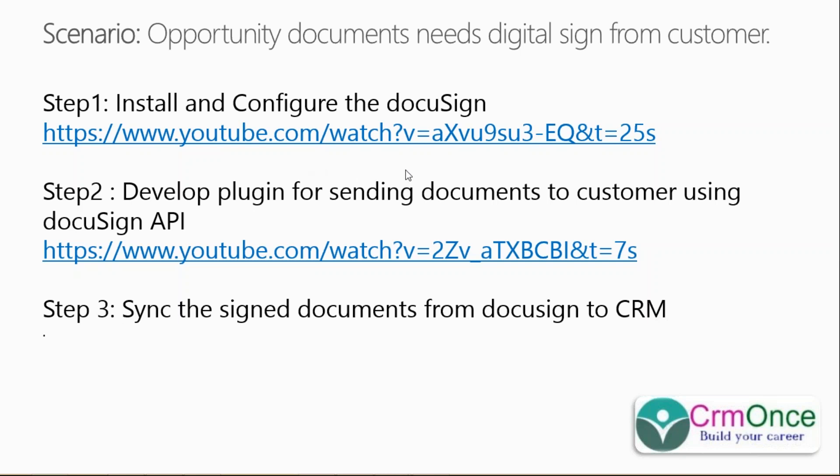In the first video we discussed how to install and configure DocuSign in Dynamics 365. In the second video, based on our conditions, we discussed how to automate sending documents using a plugin and DocuSign API. Now in this third video we are going to discuss how to sync these signed documents from DocuSign back to the CRM, completing the full cycle of this scenario.